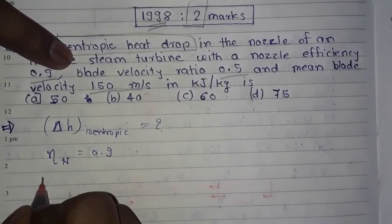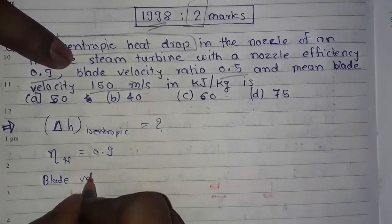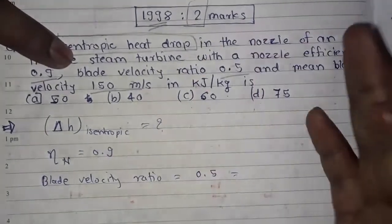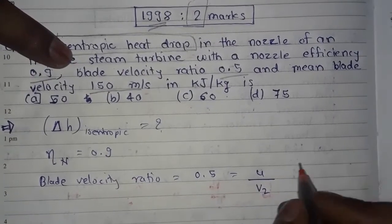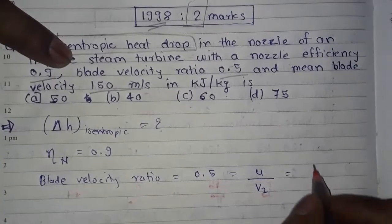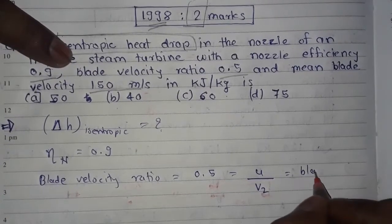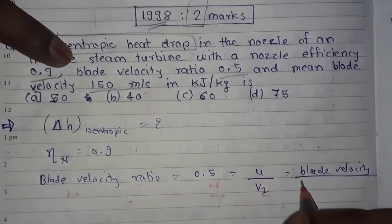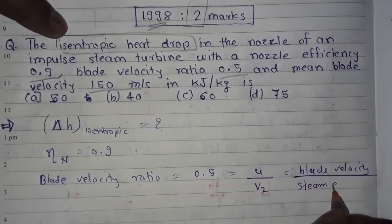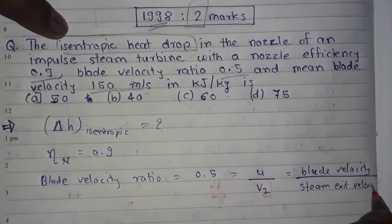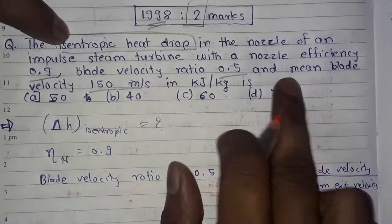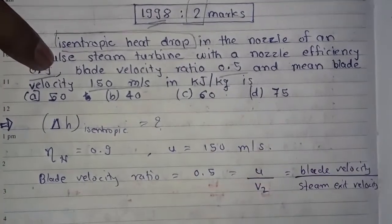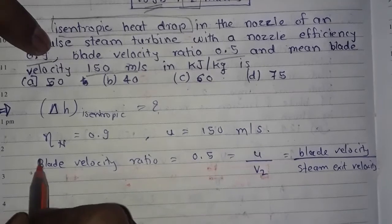Next we have the blade velocity ratio, which is given as 0.5, defined as u upon v2, where u is the mean blade velocity and v2 is the steam exit velocity. The mean blade velocity u is equal to 150 meter per second.